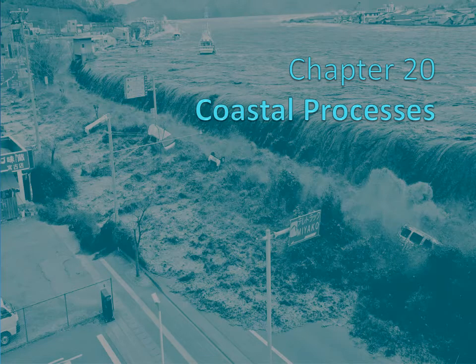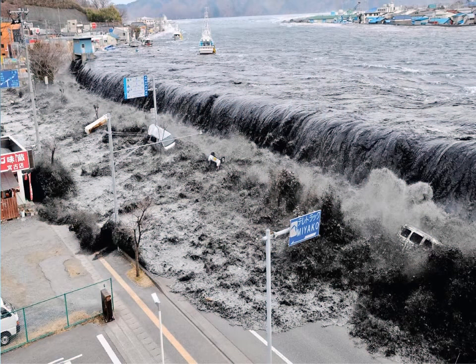Welcome to chapter 20, our last chapter. In this lecture we are going to focus on coastal processes. In the background you can imagine this is a terrible image — this is from the 2011 earthquake and tsunami that hit coastal Japan. We've already talked about earthquakes but we're going to get into the mechanics of tsunamis toward the end of this chapter and some devastating impacts of tsunamis.